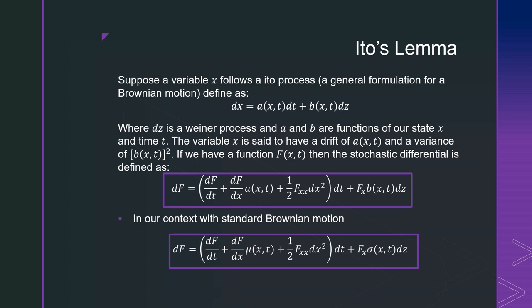If we have a function that is a function of x and t, then the stochastic differential is defined as follows: the derivative of our objective function f with respect to time plus the derivative of our function f with respect to x times our drift term a plus one half times the double derivative of f with respect to x times dx squared, and that's going to be all with the differential dt there plus f_x times b of x dz.